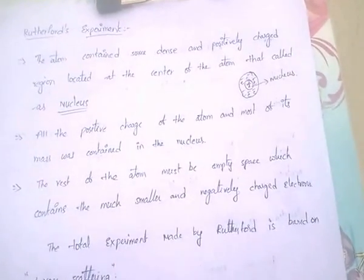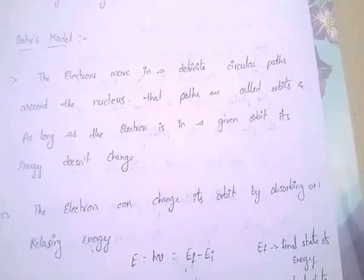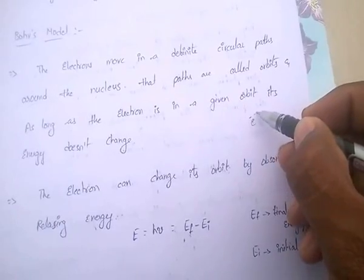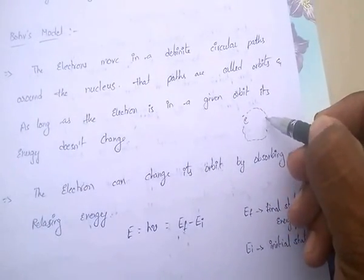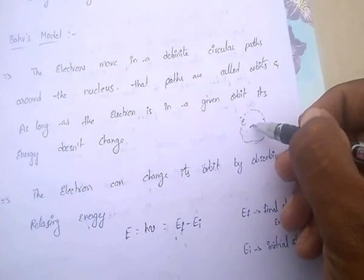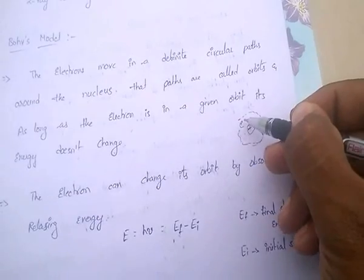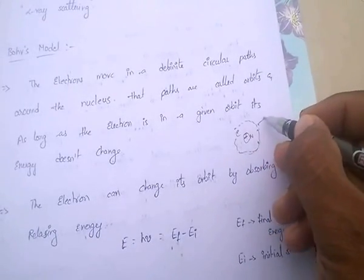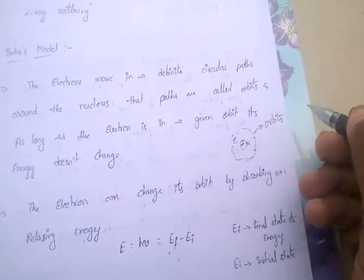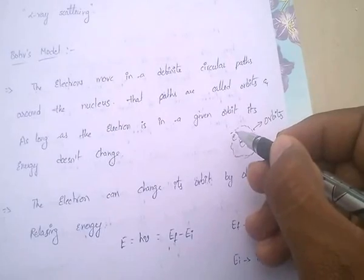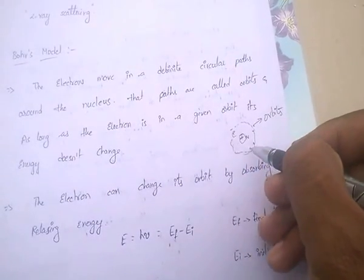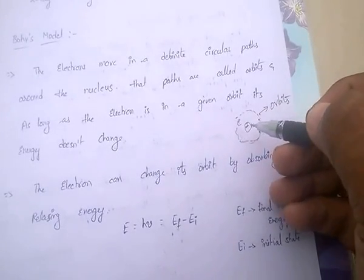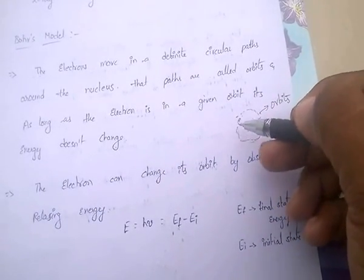The next model is Bohr's model. According to Bohr, electrons move in a definite circular path around the nucleus. These paths are called orbits. As long as the electron moves through this orbit, the energy of this electron does not change — as long as the electron is in the given orbit, that energy does not change.